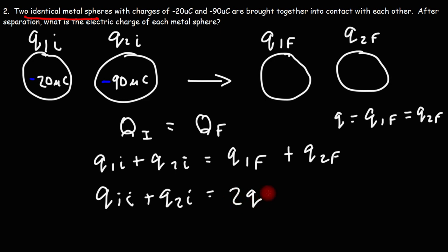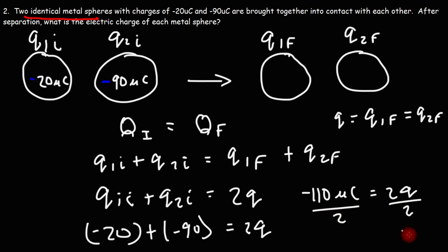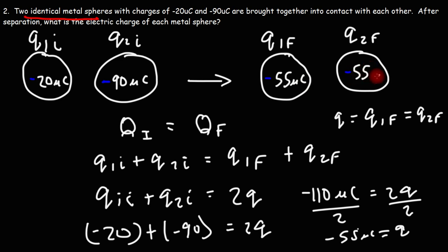Solving for Q: negative 20 plus negative 90 equals 2Q. Negative 20 plus negative 90 is negative 110 microcoulombs. Dividing by 2, that gives us negative 55. So after contact, each of the two identical metal spheres will have a charge of negative 55 microcoulombs.